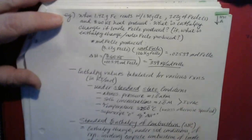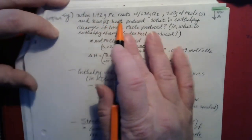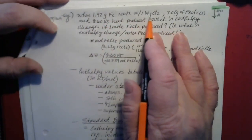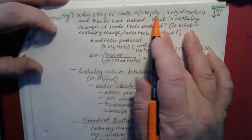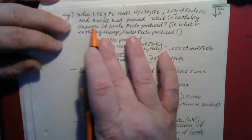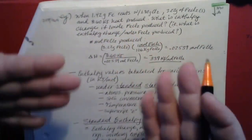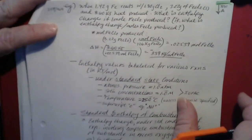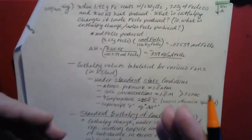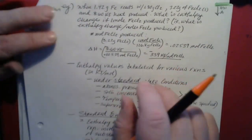The first example for today: when 1.42 grams of iron reacts with 1.80 grams of chlorine gas, Cl2, 3.22 grams of FeCl2 solid and 8.60 kilojoules of heat are produced. So this is an exothermic reaction. For exothermic reactions, the heat is essentially one of the products because the heat is given off by the reaction.